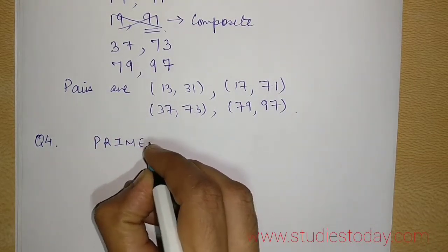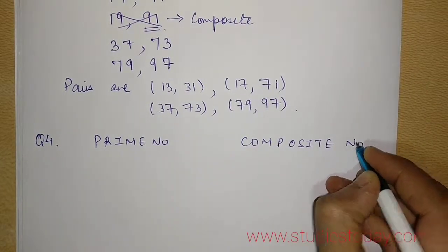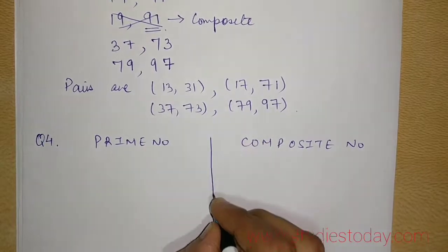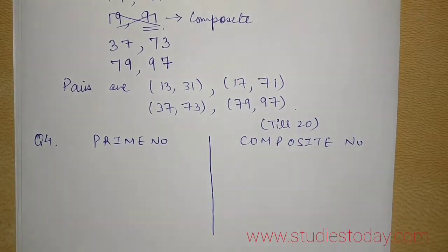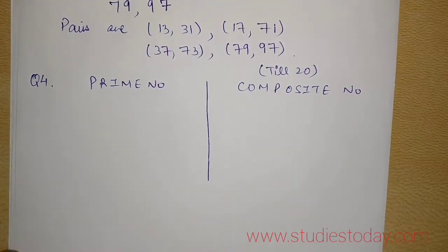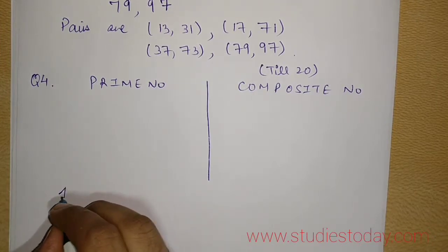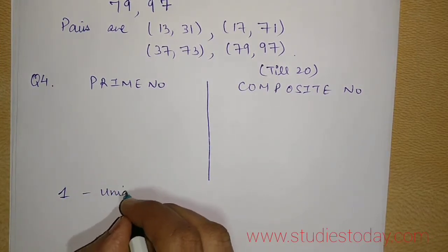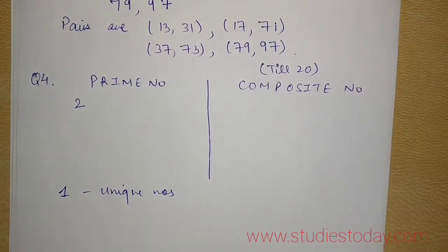Write prime number on one side and write composite number on the other and you have to take the numbers. Now children please remember that one is a unique number and under no circumstance I should incorporate it in prime number or composite number. So 1 is your unique number. Then 2 is a prime number, write it under the prime number category.